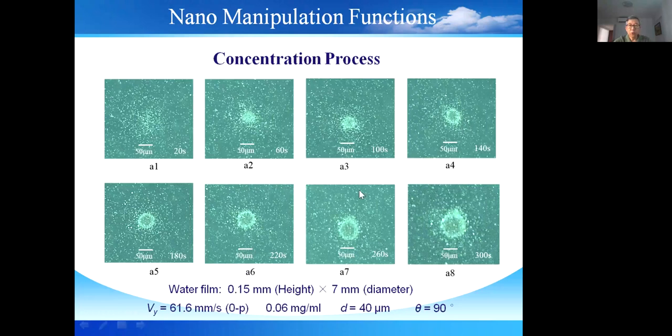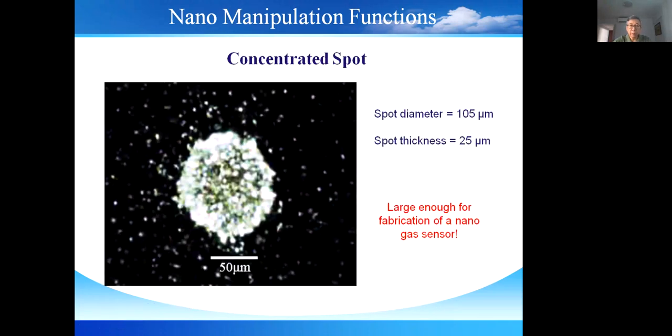These photos show a concentration process of silicon nanoparticles. After 300 seconds of sonication, we can get a concentration spot with a diameter of about 100 microns. The thickness of this is about 25 microns. So the size of this concentration spot is large enough for the fabrication of nanoparticles.